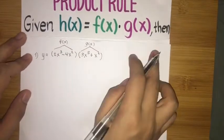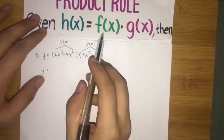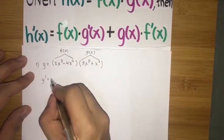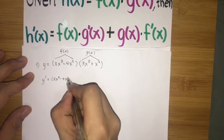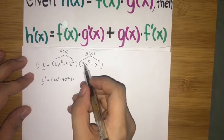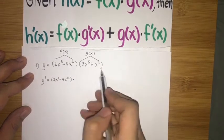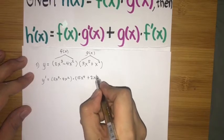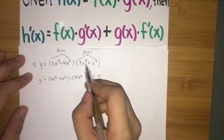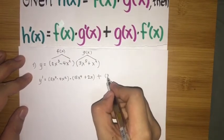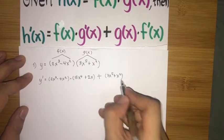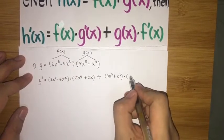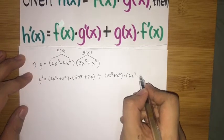From the product rule formula, y prime will be: copy f of x, which is (2x cubed minus 4x squared), then multiply it by the derivative of the second function g of x, whose derivative is (15x to the fourth plus 2x). Then plus: copy the second function g of x, which is (3x to the fifth plus x squared), and multiply it by the derivative of the first function f of x, whose derivative is (6x squared minus 8x).